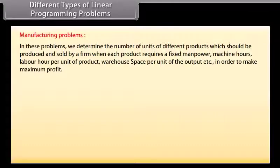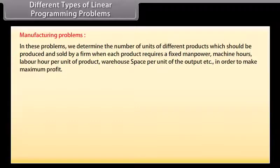Different types of linear programming problems. Manufacturing problems: In these problems, we determine the number of units of different products which should be produced and sold by a firm when each product requires a fixed manpower, machine hours, labor hours per unit of product, warehouse space per unit of output, etc., in order to make maximum profit.